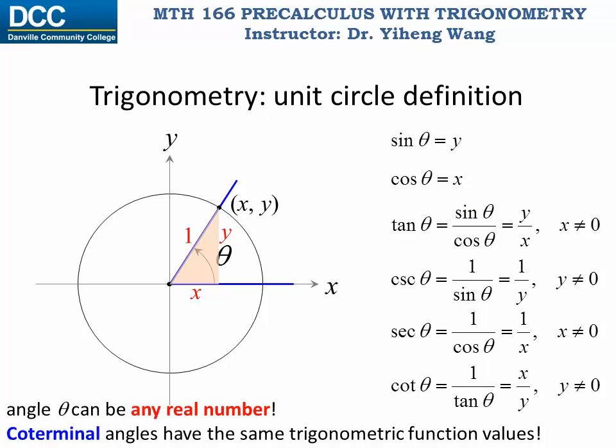However, using the unit circle definition, we can find the trigonometric functions for any angle theta — theta can be any real number. You can also see clearly that coterminal angles will have exactly the same six trigonometric function values.